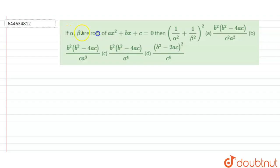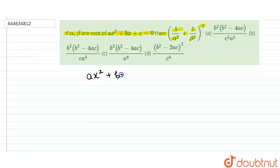The question is: if alpha and beta are the roots of the equation ax² + bx + c = 0, then find the value of (1/α² + 1/β²) whole square. These are our options. We have ax² + bx + c = 0 and alpha, beta are roots of this equation.